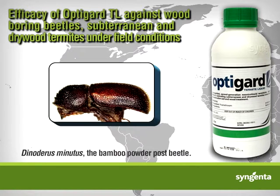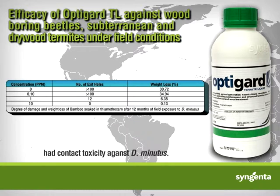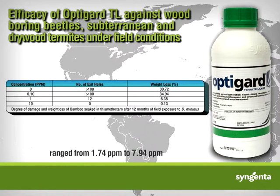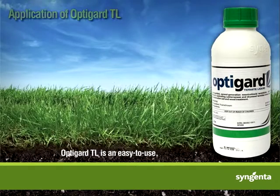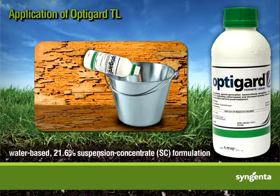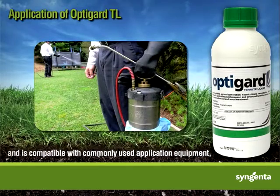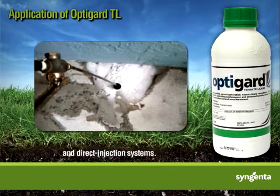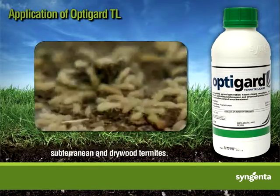Thiamethoxam has been proven effective against Dinoderus minutus, the bamboo powder post beetle. A published study by MN-Octa showed that thiamethoxam had contact toxicity against D. minutus. LC50 values for thiamethoxam against D. minutus range from 1.74 to 7.94 parts per million based on dose-mortality responses. Both laboratory and field exposure tests suggest that at least 10 parts per million of thiamethoxam may have anti-oviposition or anti-feeding effects on D. minutus. OptiGuard TL is an easy-to-use water-based 21.6% suspension concentrate formulation that readily disperses in water, has virtually no odor, and is compatible with commonly used application equipment including liquid applicators, foam applicators, and direct injection systems. It is labeled for use in pre- and post-construction treatments to control powder post beetles, subterranean, and drywood termites.